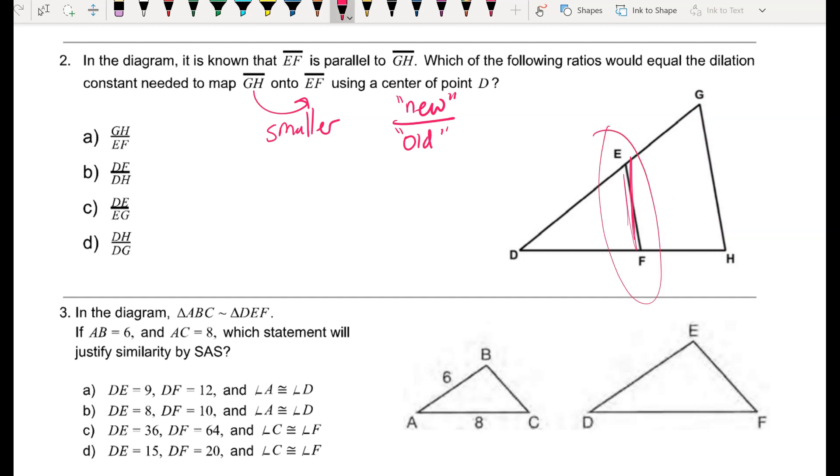One way to get my dilation constant or my scale factor is to take some new side and divide it by some corresponding old side. So in this case, my new would be EF, and my old would be GH, because I'm going from the big to the small. So one possible scale factor would be the small side EF over the big side GH. I could also do DF over DH or DE over DG. It looks like DF over DH would be the small side over the old side.